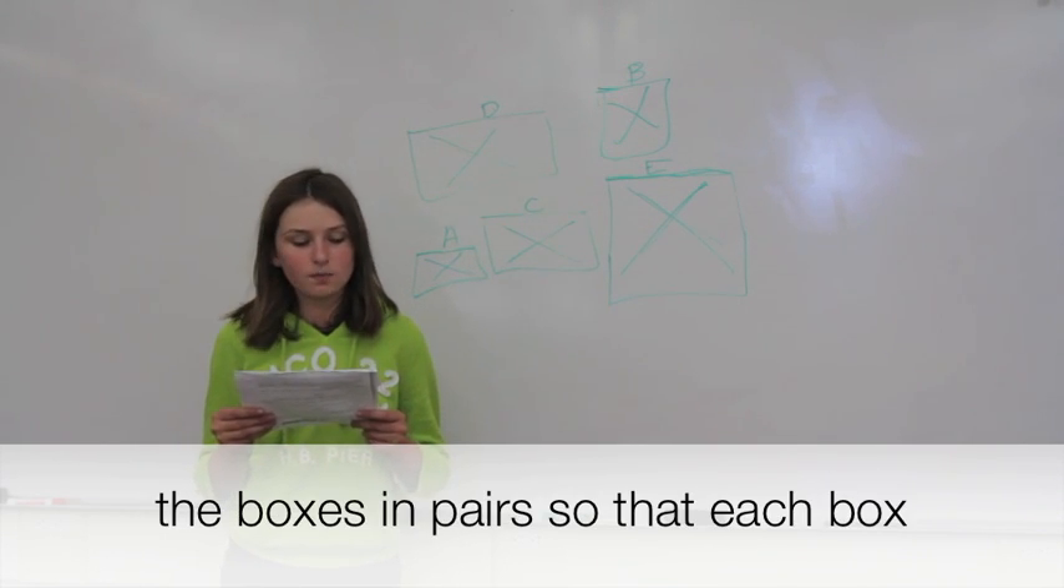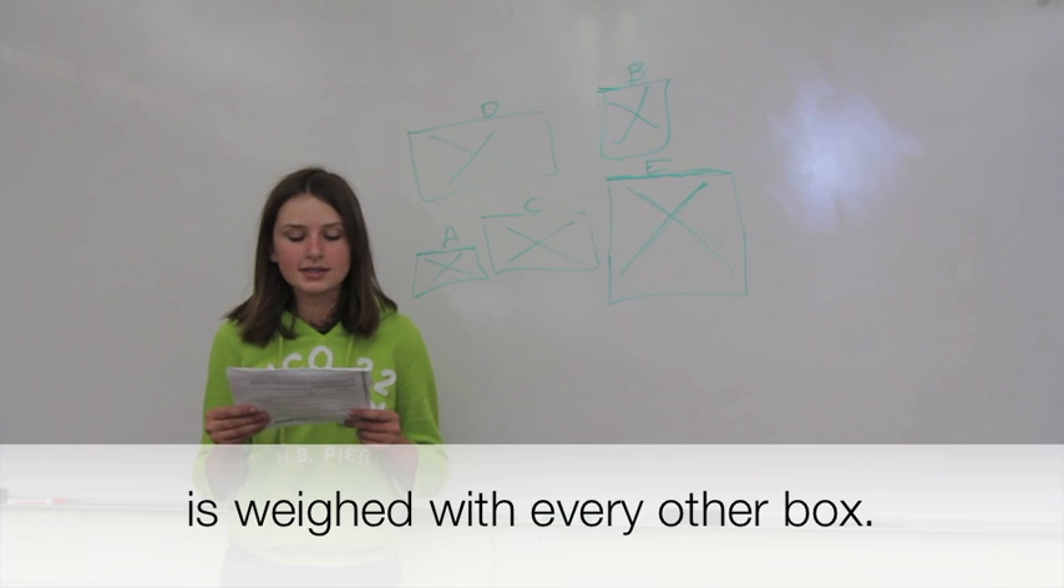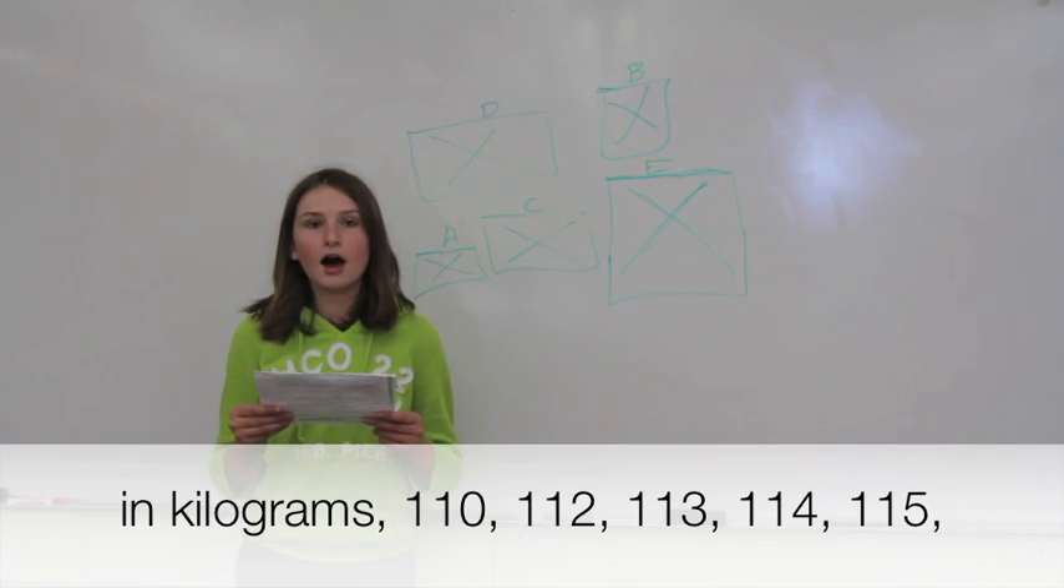The clerk, therefore, decides to weigh the boxes in pairs so that each box is weighed with every other box. The weights for the 10 pairs of boxes are, in kilograms: 110, 112, 113.